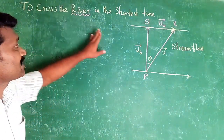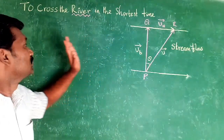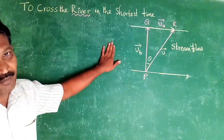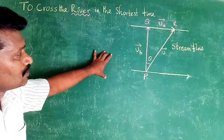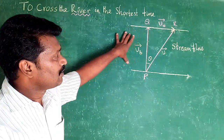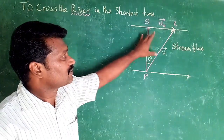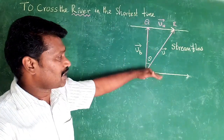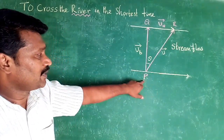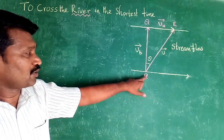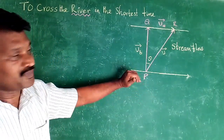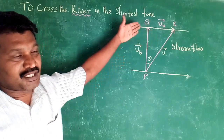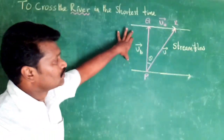A boat wants to cross the river in the shortest time. Consider this is the force of the river. This is one bank of the river and this is another bank of the river. Consider point P on one bank of the river and point Q on the other side of the bank.